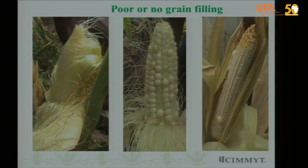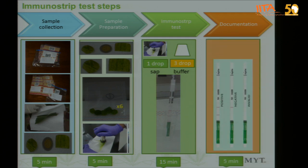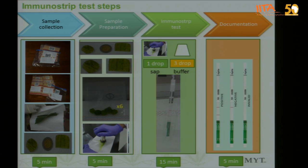For diagnosis using immunostrips: collect leaves from one plot of six plants — as Monica described, using a zigzag or other approach — and use a small coin-sized piece from each plant. Extract the sap using the provided buffer and apply one drop of sap with three drops of buffer. Within 15 minutes you can determine the presence or absence of virus. Two bands means virus is present; one band means no virus; no bands means the result is invalid. This method can easily detect MCMV at the field level.